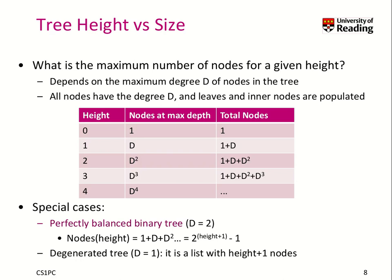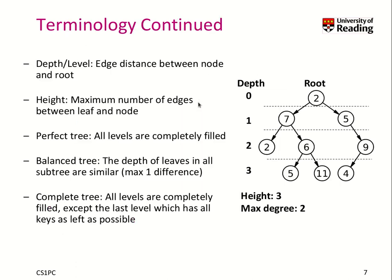It is of interest to understand how many nodes can actually be stored in a tree. Let's have a look at the tree height versus the potential capacity. When you do such theoretical analysis, it's important to know about and specify the exact choices we are talking about. We talk here about a tree where the maximum degree d of a node is set, and we assume that the tree is a complete and perfect tree — meaning all levels are completely filled.